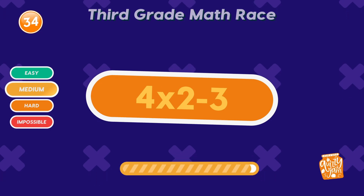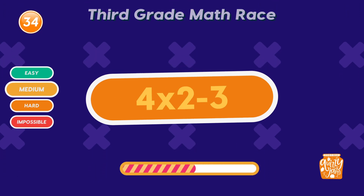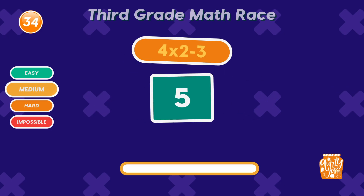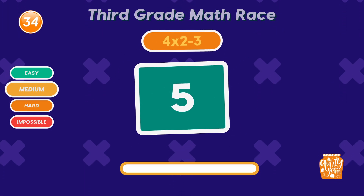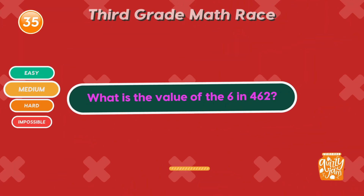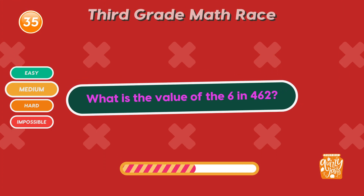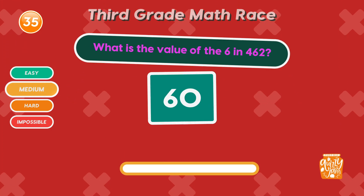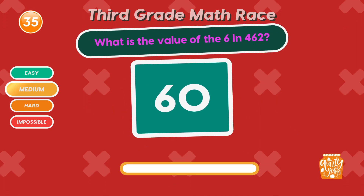What is 4 times 2 minus 3? 5! Brain power activated! What is the value of the 6 in 462? 60! Place value pro!